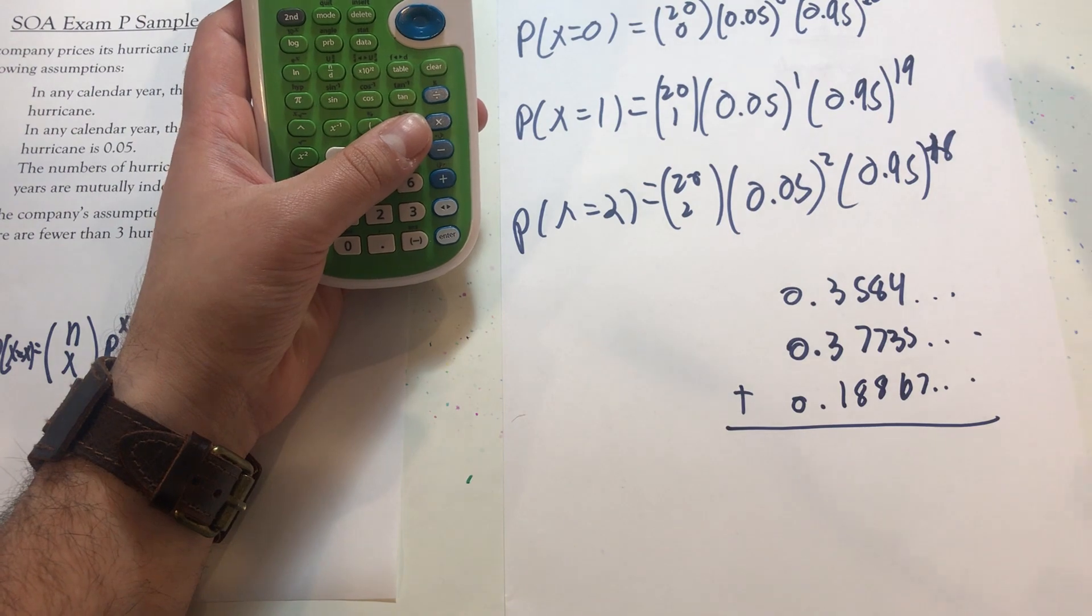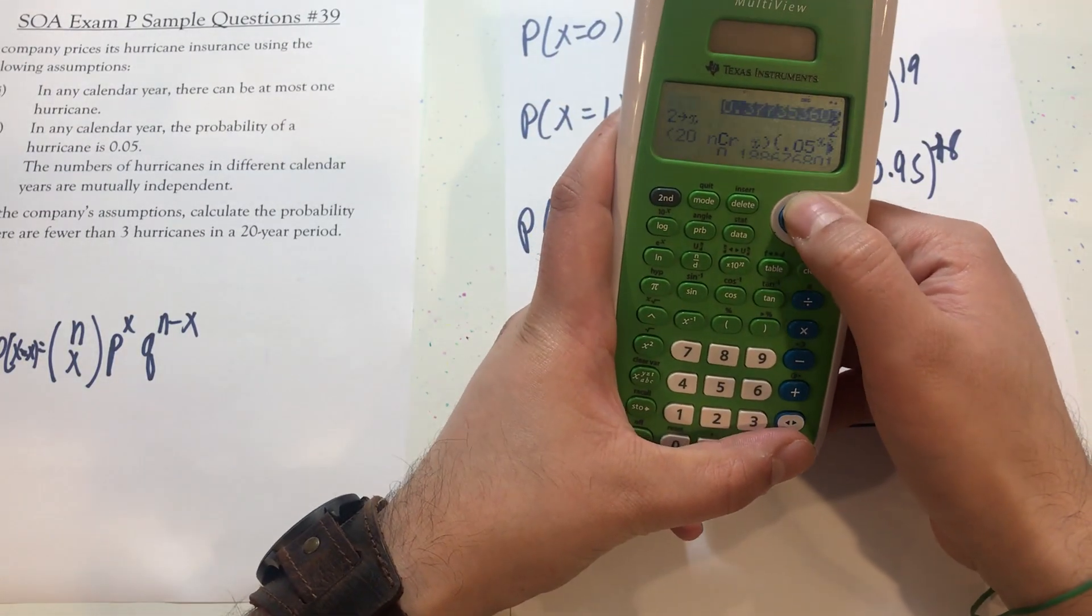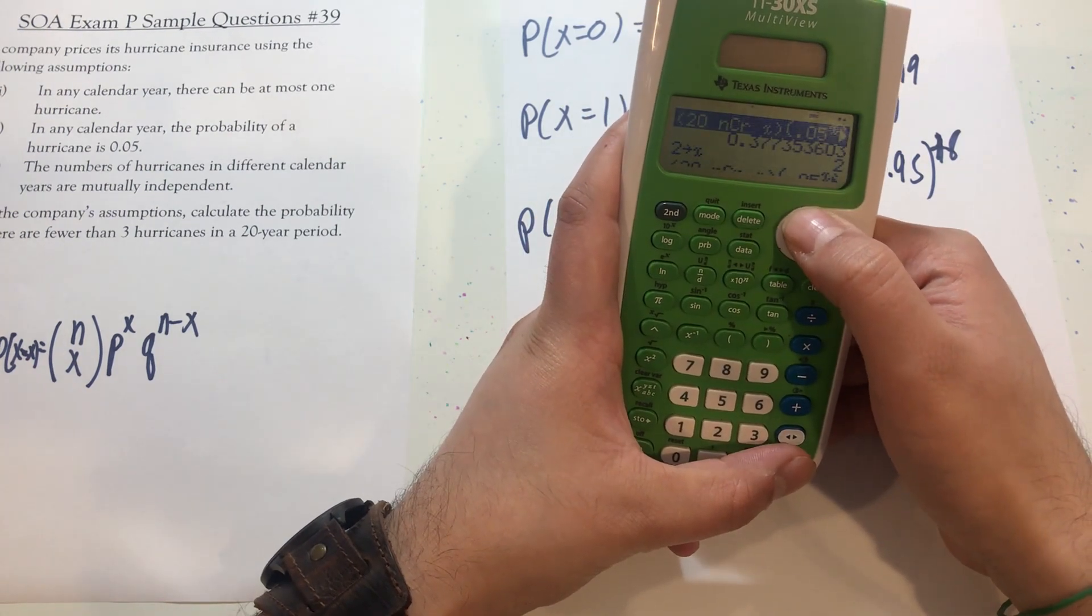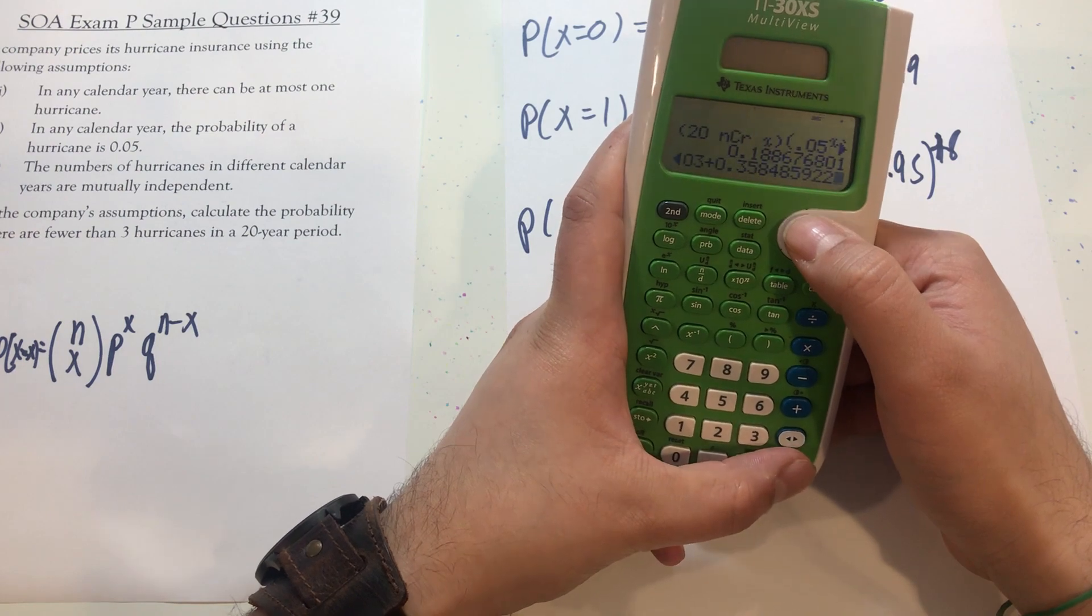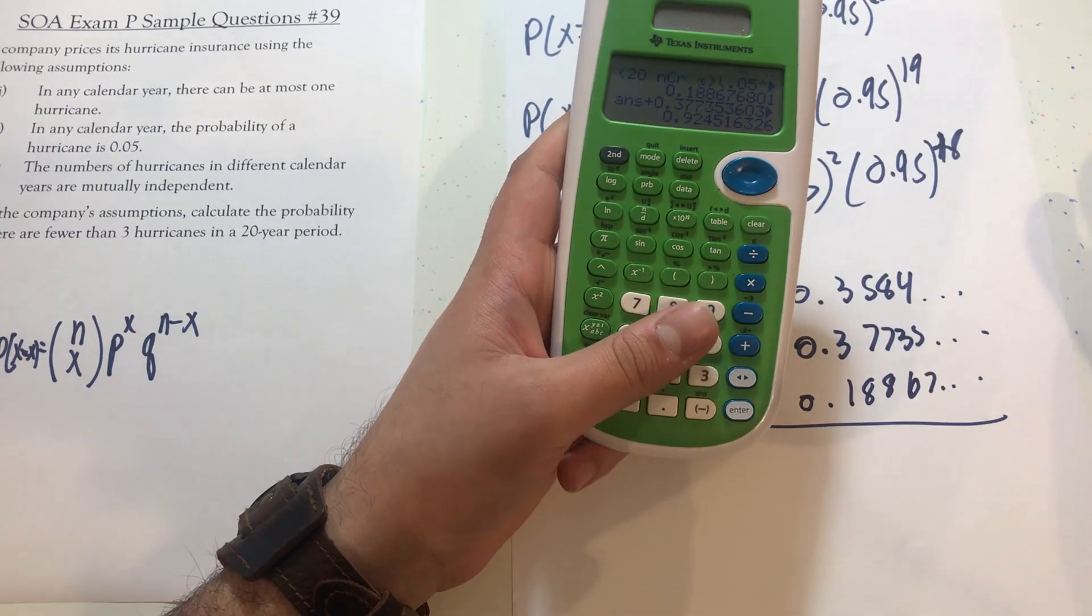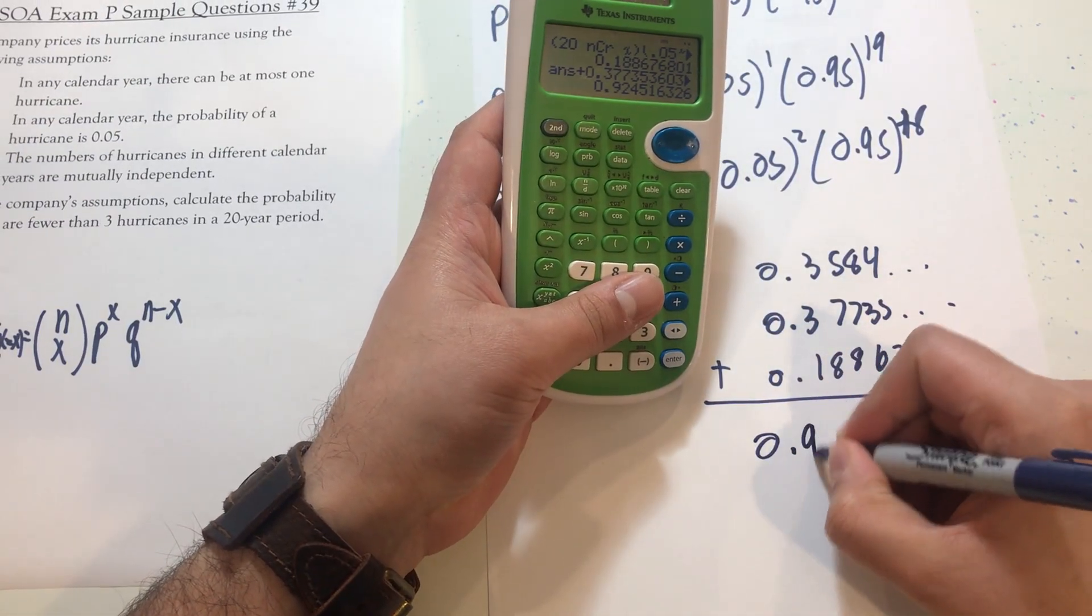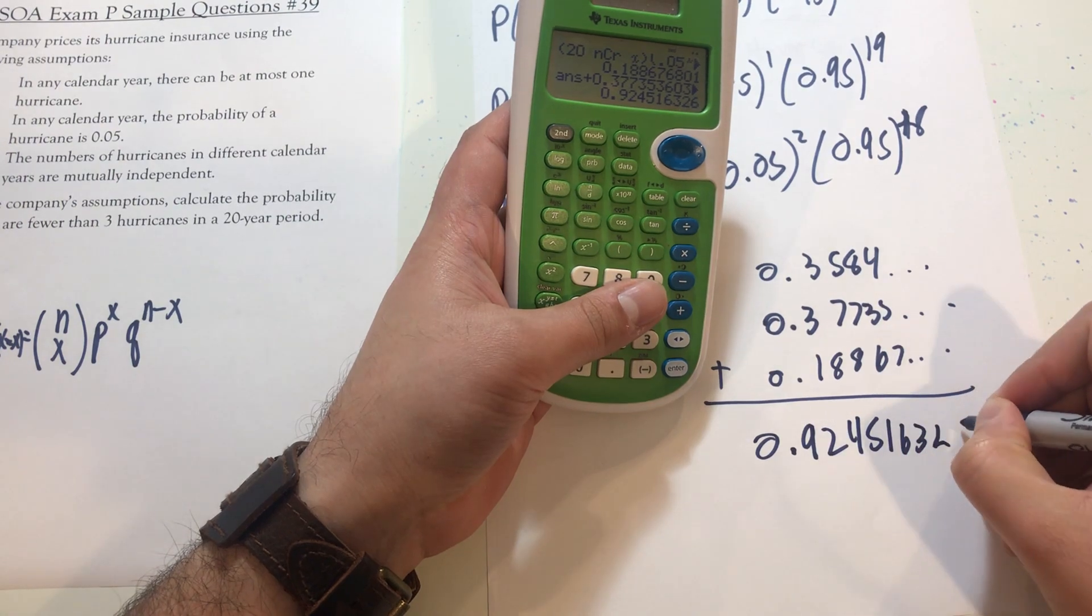So I add those up to figure out the total probability of fewer than three. So two, one, or zero. So I just add those up by grabbing the values from above.